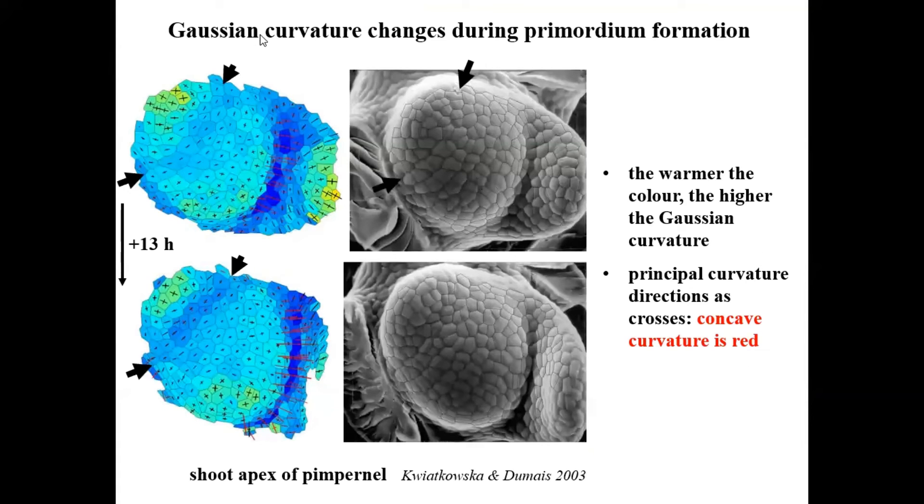How Gaussian curvature can be used in biology. A nice example is when we look at the shape of the shoot apical meristem, which generates new primordia. We can recognize, based on the elevated Gaussian curvature, the places where new primordia arise. But we can also recognize the future and already existing boundary between the primordia and meristem by negative Gaussian curvature value.